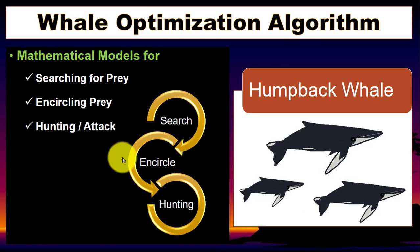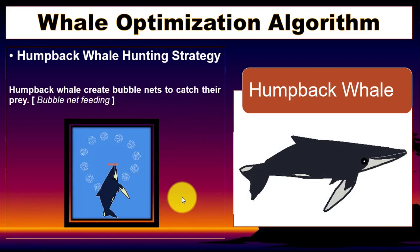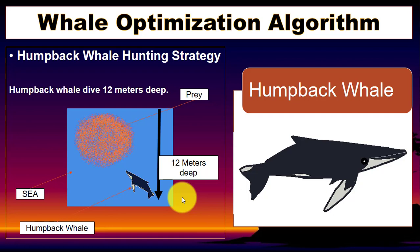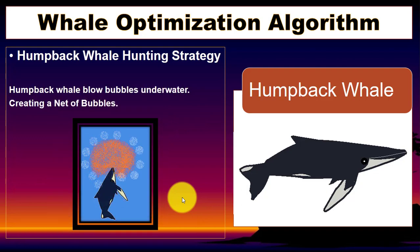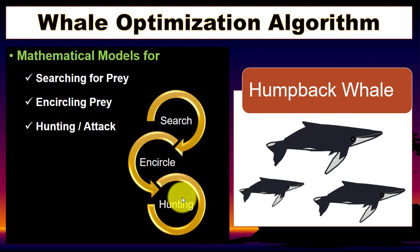We have different phases: first, search for the target; then circle it; then attack. In real life, this is natural behavior — whales will search for the target, circle them using this method, and then attack. To represent this situation mathematically, we will use a mathematical model.